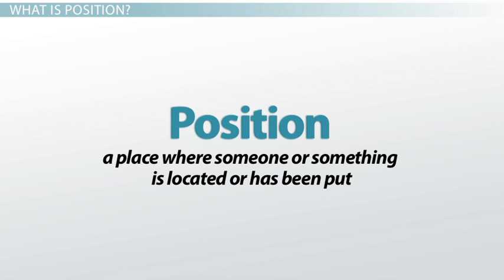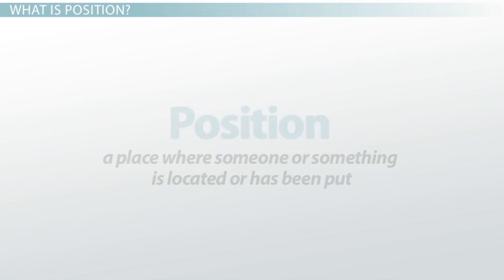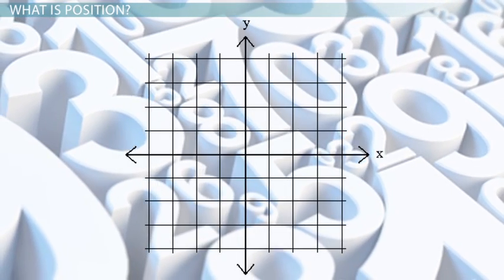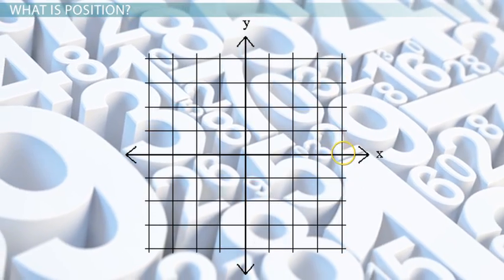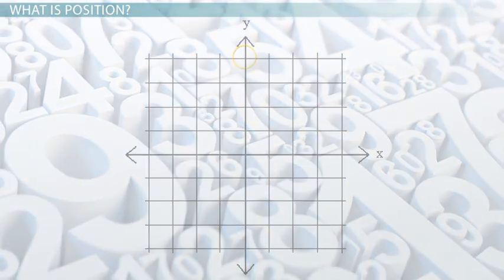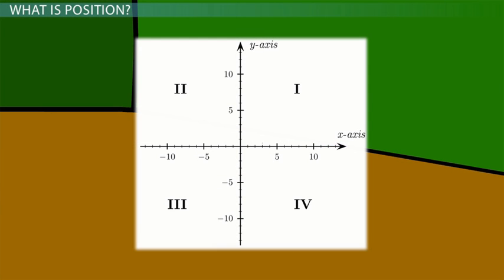Position is a place where someone or something is located or has been put. In physics, position is usually a number on an axis. You can have an x-axis or a y-axis. If you drew these axes on the floor of a room and then moved to a random place in that room, you would have a position in both the x and y directions. You might be at positive 6 meters in the x direction and negative 3 meters in the y direction. That is your position.